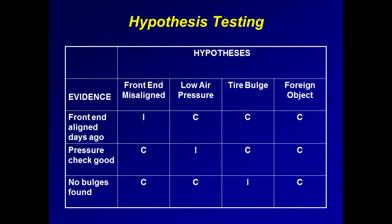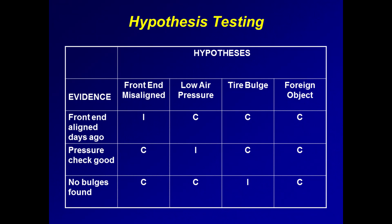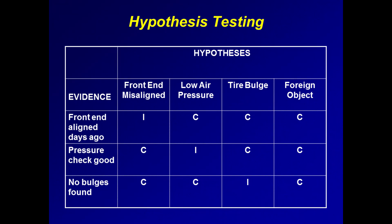Here are some critical teaching points. What does the matrix show about evidence that is consistent? That it isn't useful — it has no diagnostic value in determining which hypothesis is most likely. What evidence is useful? That which is inconsistent, because it eliminates hypotheses or reduces their likelihood. So to repeat: the purpose of hypothesis testing is not to prove a hypothesis, but to look for ways to disprove it. Hypothesis testing, or ACH, more than any other structuring technique, exposes our human tendency to seek and rely on supporting — consistent — evidence.